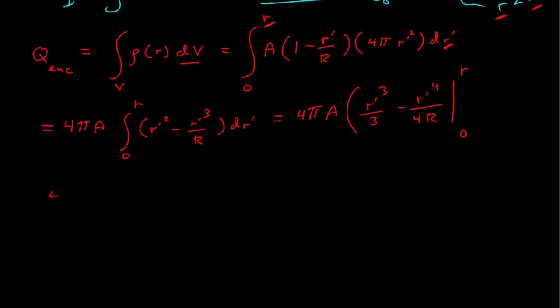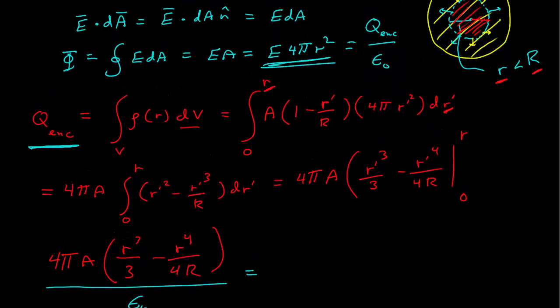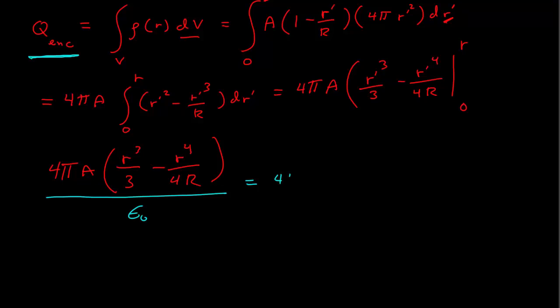So, the zeros give me zero, and so I'm just at this fixed but arbitrary r cubed over three minus r to the fourth over four R. So, this is the total charge enclosed. And so, Gauss's law tells me that this divided by epsilon naught is equal to the total flux, which is, we calculated that before, E 4 pi r squared.